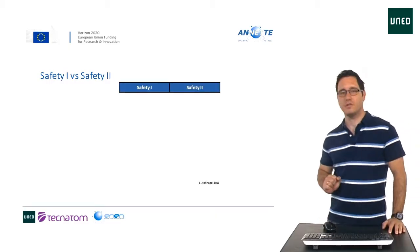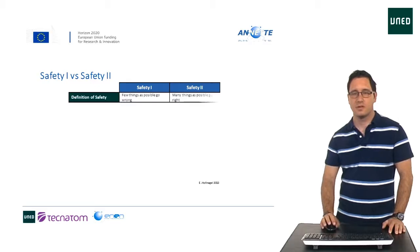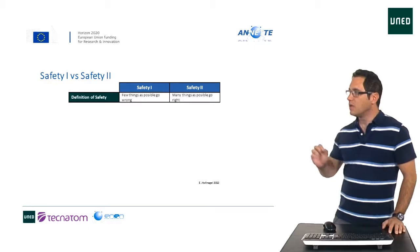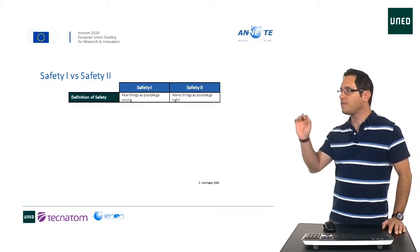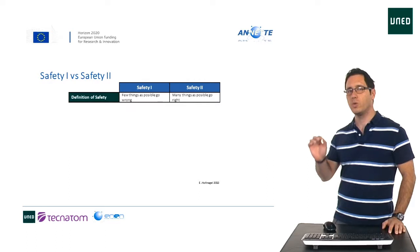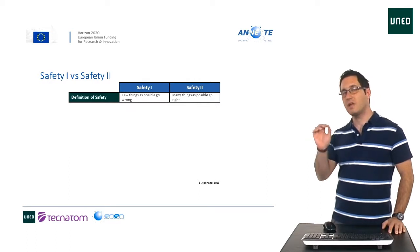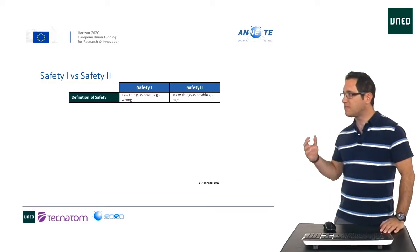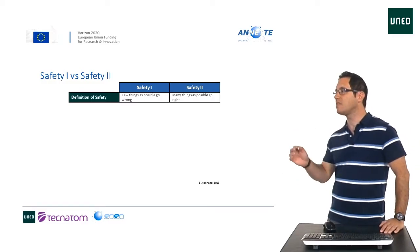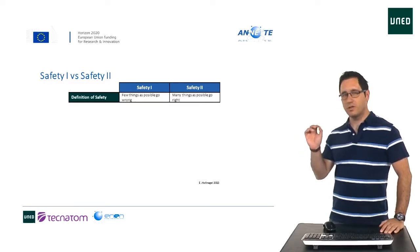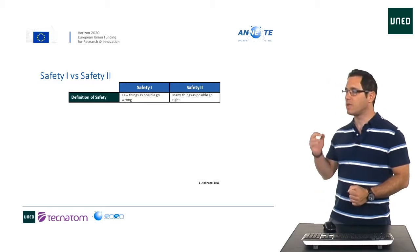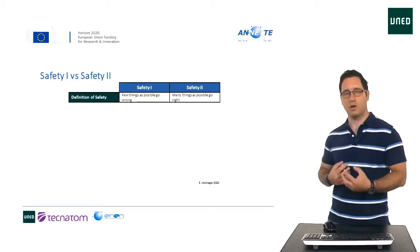The first thing we are going to see is the proper definition of safety. According to Safety I, safety means as few things as possible go wrong — we want to have the least number of accidents. Safety II, on the other hand, defines safety as having as many things as possible go right. We are going to look for that everyday work and these positive outcomes.